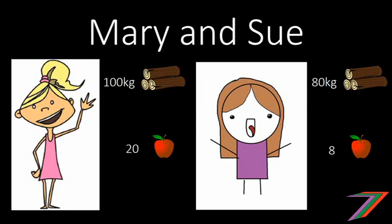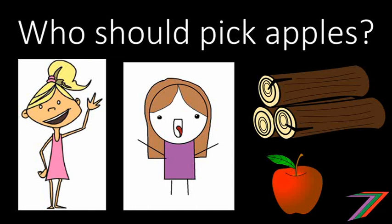I'm going to explain the theory behind specialization, keeping it fairly simple. We have two people, Mary and Sue, and two tasks: collect wood or pick apples. Mary can collect 100 kilograms of wood in one hour or pick 20 apples. Sue can collect 80 kilograms of wood or pick 8 apples in one hour. As you can see, Mary is more proficient at both tasks — but she can't do both, so what should Sue do? Should she pick apples or collect wood?